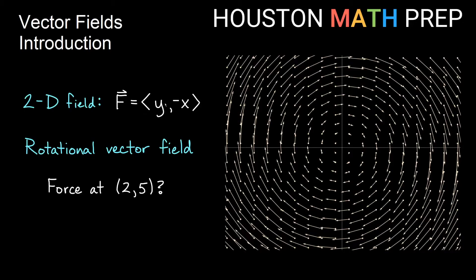Think about if I have my vector field <y, -x> and I want to find the force at the point (2, 5), so I go over 2 up 5 and I want to know the force at that. Well I simply plug in 2 for x and I plug in 5 for y and if I do that up here then that's going to give me the vector at that point (2, 5) is actually <5, -2>.